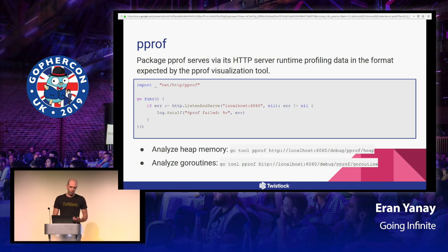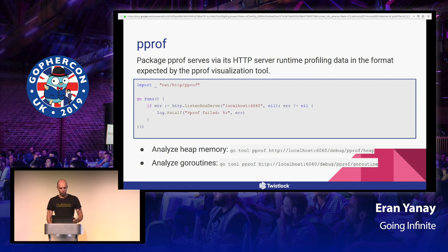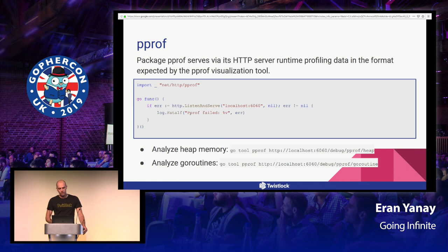I want to have a better understanding because 50,000 connections are already using one gig of RAM — it's too much, and I want to see how I can improve it. For this, I want to quickly go over pprof. pprof is a way to have a good analysis of our heap usage, goroutines, and see exactly what the application is doing. It's a built-in package in Go. It uses HTTP handlers to serve profiling data that we can then consume using the pprof tool and visualize.